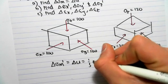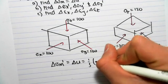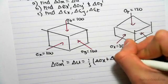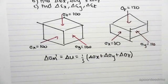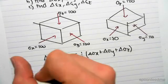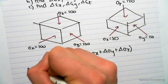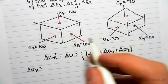Which is just simply a third of change in total stress x, plus change in total stress y, plus change in total stress z.